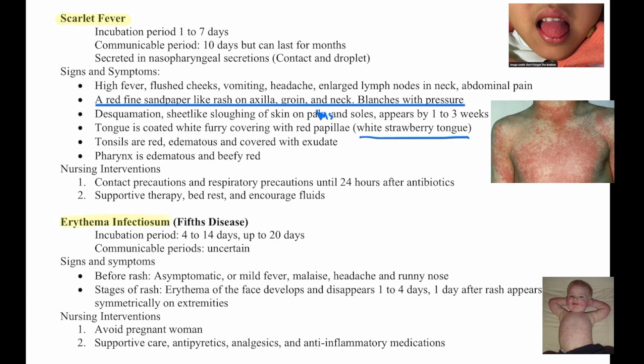Then we have erythema infectiosum, or Fifth Disease. The incubation period is 4 to 14 days, but up to 20 days. The communicable period is unknown. Before the rash, people will be asymptomatic or have a mild fever with malaise, headache, and runny nose. Then stages of the rash: erythema of the face develops and disappears after one to four days, then one day after, the rash appears symmetrically on all extremities. Nursing interventions are to avoid pregnant women and provide supportive care, antipyretics, analgesics, and anti-inflammatory medications.